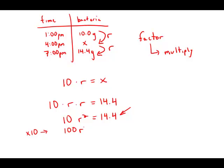And so what I'll get is 100 r squared equals 144, which just has the effect of moving the decimal place to the right one space.